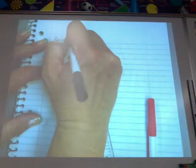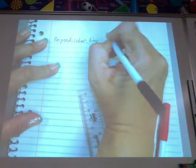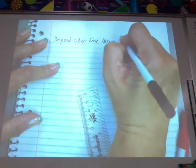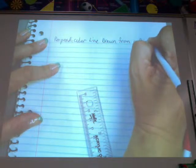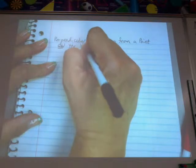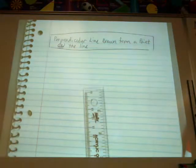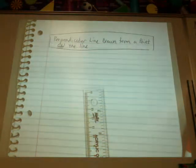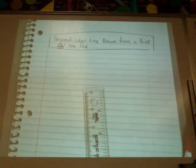This is perpendicular drawn from a point on the line. And this is the difference between the two constructions. The next one we'll do is a point off the line, still making a perpendicular line to another segment.